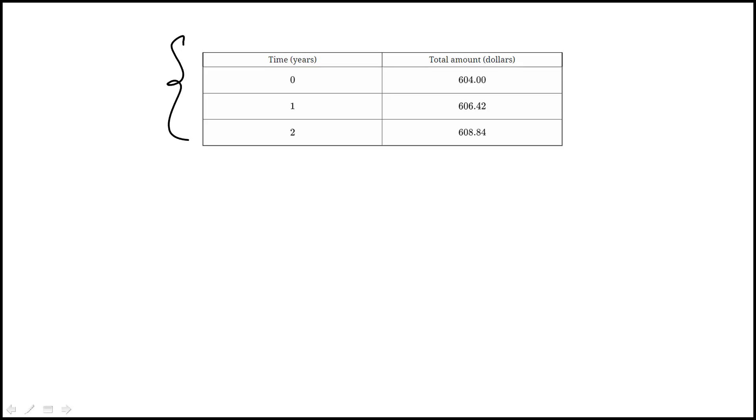So in this question we're shown this table that shows the balance in Rosa's savings account after one year, two years. This is the initial amount and they're asking us to identify the equation that best represents this relationship.